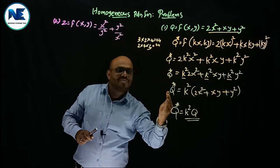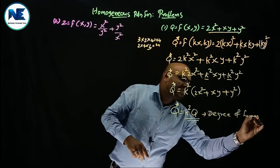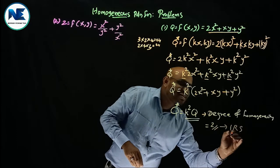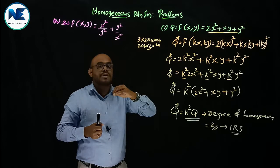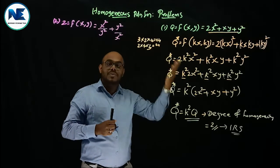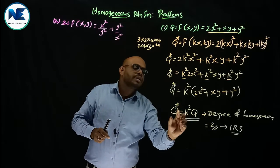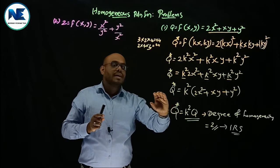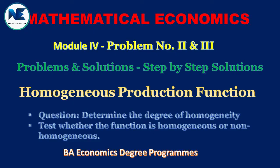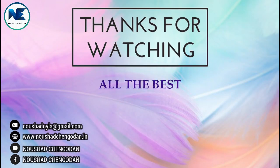Therefore, this production function is a homogeneous production function, because multiplying all inputs by k allows us to factor out k with a constant power. The degree of homogeneity is 2, since the power on k is 2. This means the production function exhibits increasing returns to scale — when you double the inputs, output increases by more than double. So this is a homogeneous production function of degree 2, reflecting increasing returns to scale.